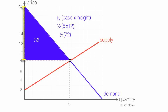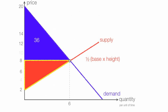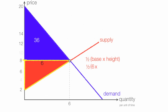Now I'm going to talk about producer surplus. Producer surplus is the area below price and above the supply curve — the red triangle. The area of this red triangle is one-half times base times height. The base is 6. The height is also 6, that's 8 minus 2. This gives me one-half times 6 times 6, or one-half times 36, which equals 18. So producer surplus is 18.